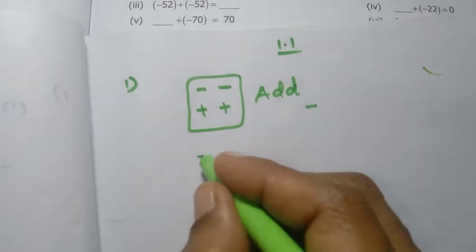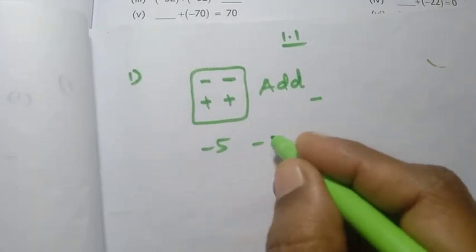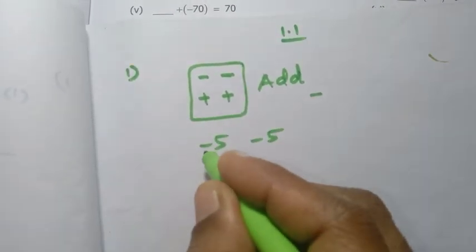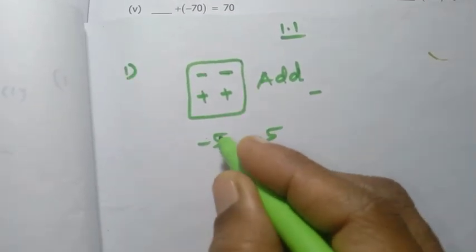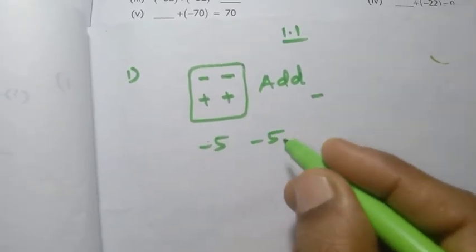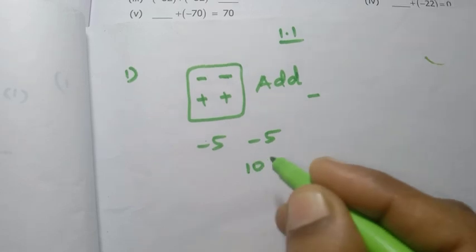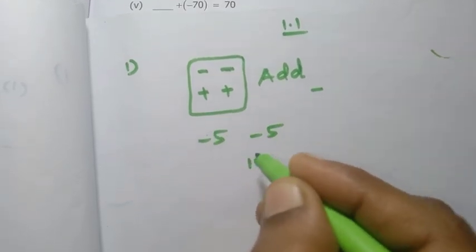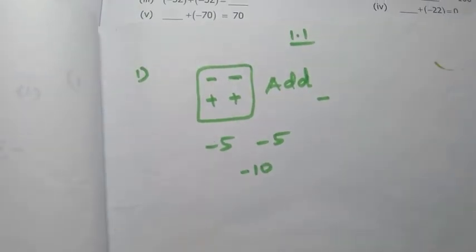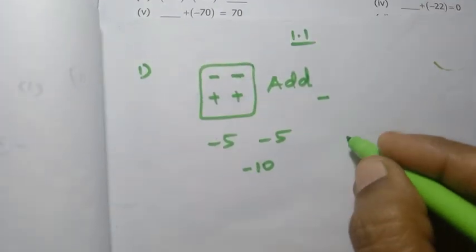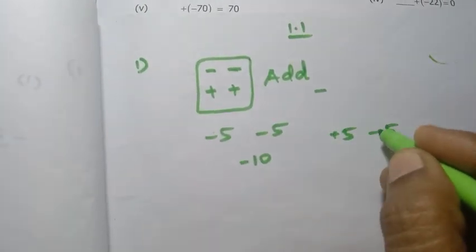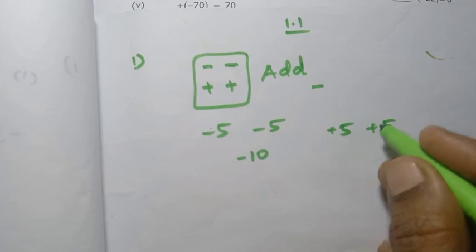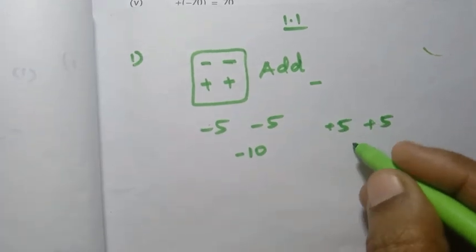So we will add. For example, 5 plus 5 equals 10. Here both numbers have the same sign, so we add them: 5 plus 5 is 10.